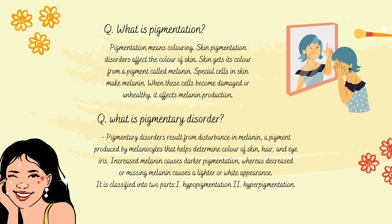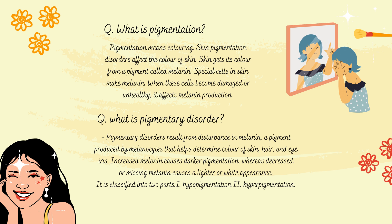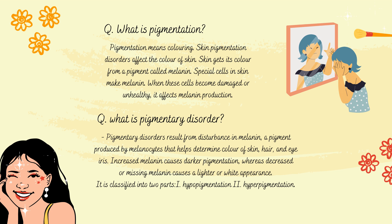What is a pigmentary disorder? Pigment disorders result from a disturbance in melanin produced by melanocytes, which helps to determine the color of skin, hair, and eyes. Increased melanin causes darker pigmentation, whereas decreased or missing melanin causes a lighter or white appearance. It is classified into two types: first, hypopigmentation; second, hyperpigmentation.